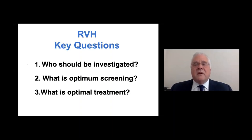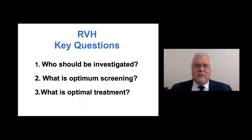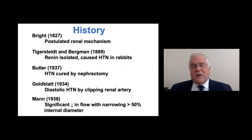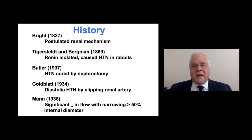When we think about renal vascular hypertension, there are several key questions: who should we be investigating, what's the optimum screening, and how do we treat it? The first thing to go over is a little history of how this entity was identified. The first inkling that there might be a renal cause of hypertension was proposed almost 200 years ago by Bright — it was called Bright's disease in the early days.